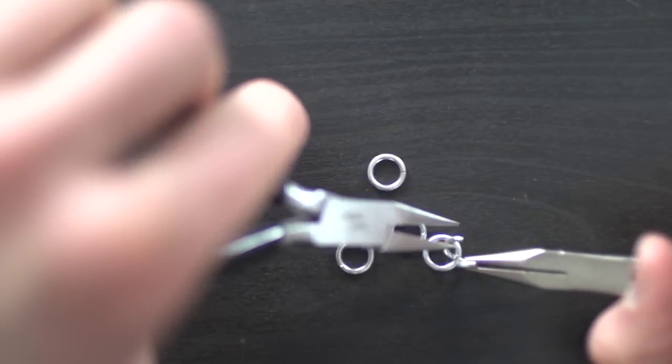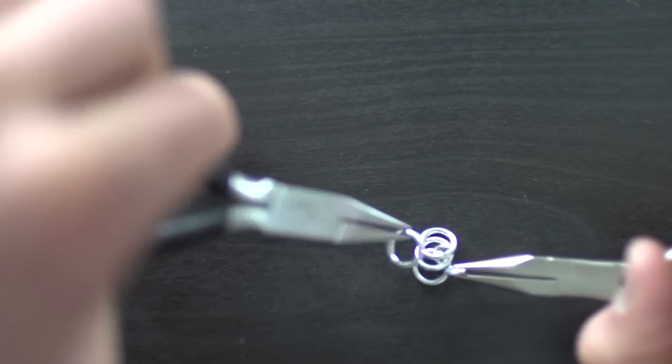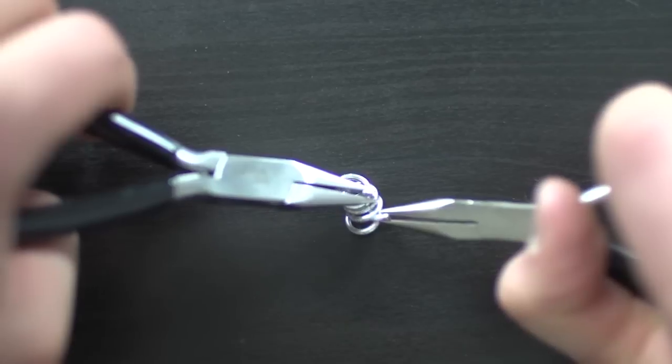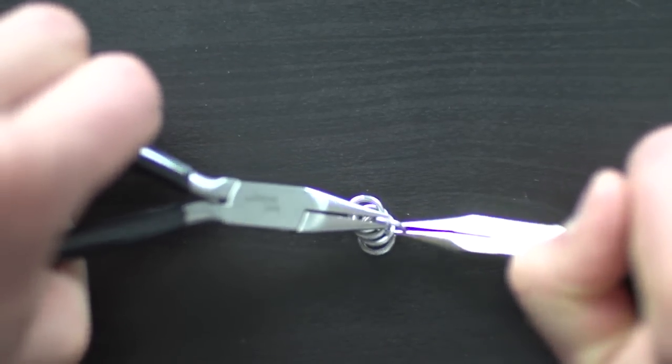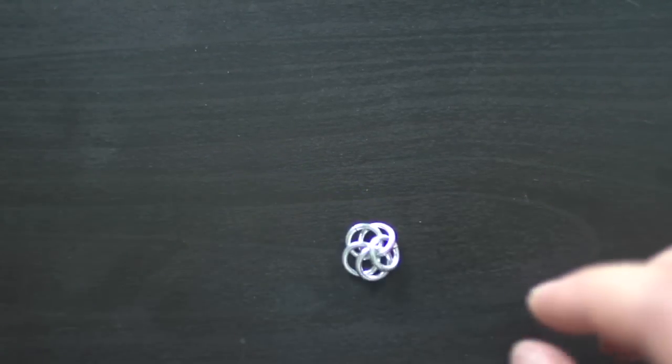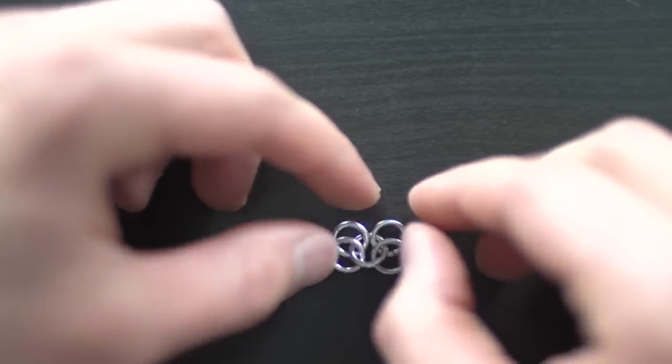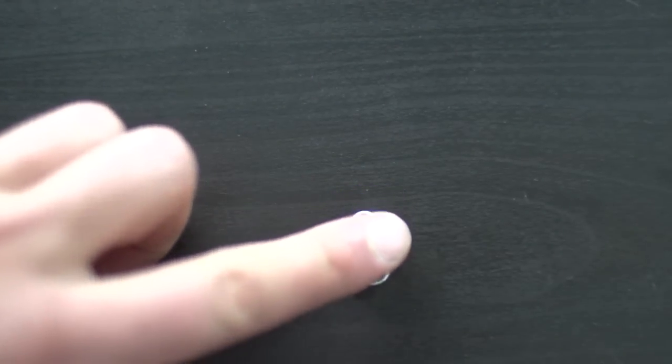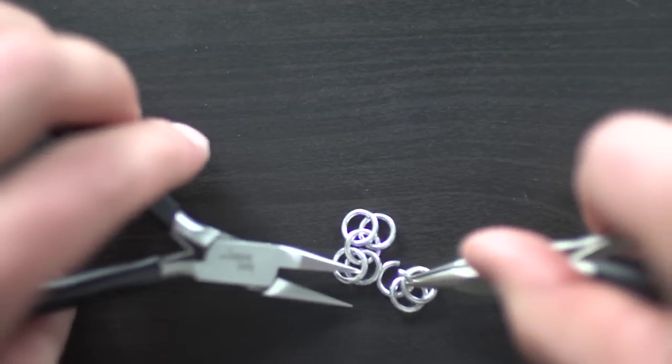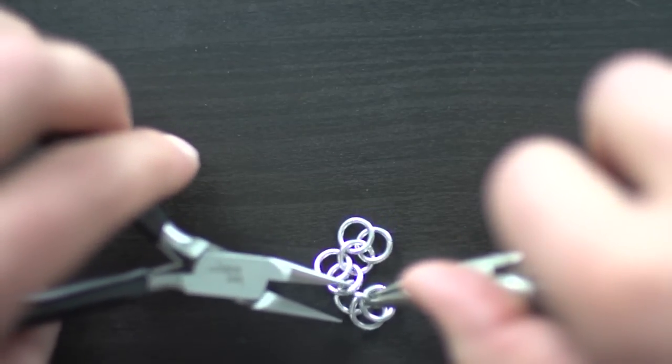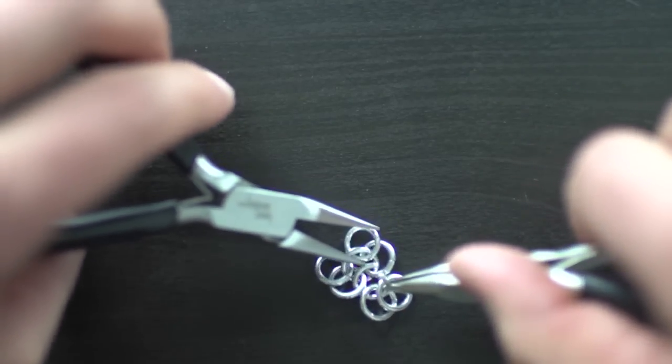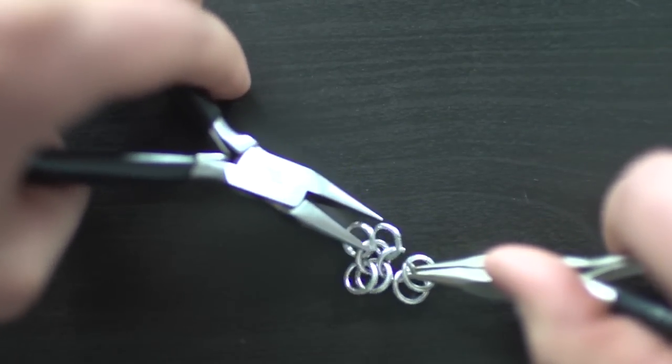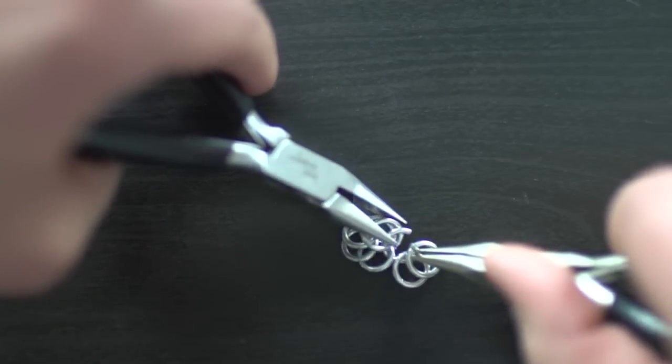Start off by attaching four closed rings to an open ring. Place it down so the rings are lying like so. We're going to be doing what's called a European 4 to 1 weave here. Take an open ring with two closed rings and connect it through two of the rings as shown. You're going to do this repeatedly to make a chain 24 center rings long.